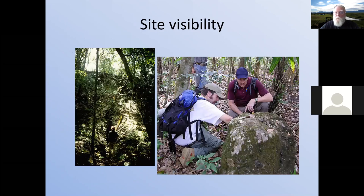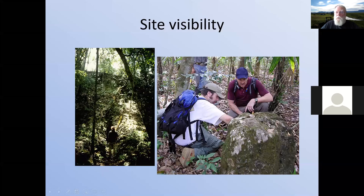Here are some examples of site visibility. There's a Maya temple in this picture — believe it or not, there's a person standing at the top of the pyramid. You can see a situation where the vegetation is so dense that the actual visibility of what should be a very salient structure is just about zero — really hard to see unless you're stumbling right up against it. Here are a couple of Maya archaeologists looking at a carved stela, and again it's not very visible from any great distance.